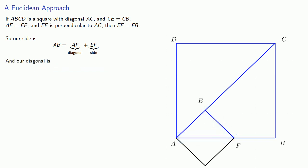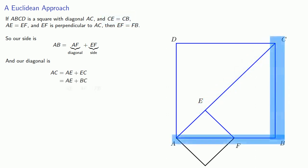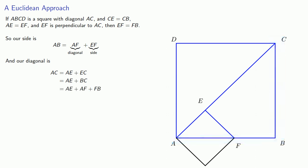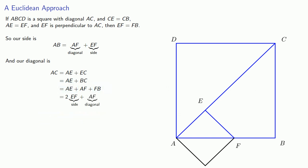The side AB of the original square equals the diagonal of the smaller square plus FB, and FB equals EF, which is the side of the smaller square. Similarly, the diagonal AC equals AE plus EC, and EC equals BC equals AF plus FB. Since AE, EF, and FB are all equal, AE plus FB equals 2EF. So our new diagonal is two sides plus the old diagonal — exactly the side and diagonal relationship described by Theon.